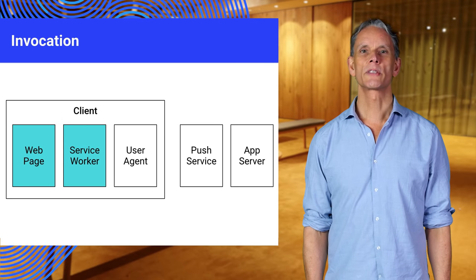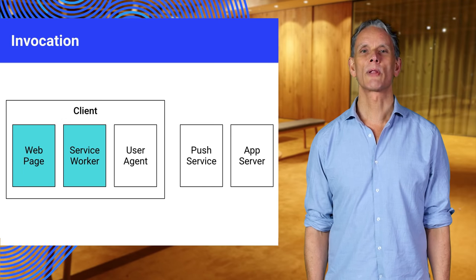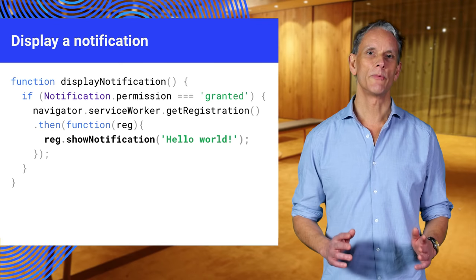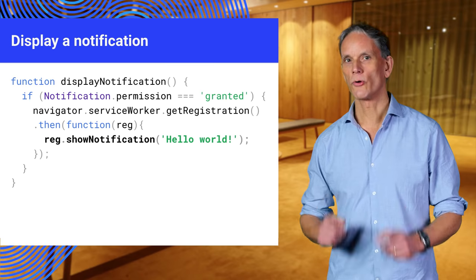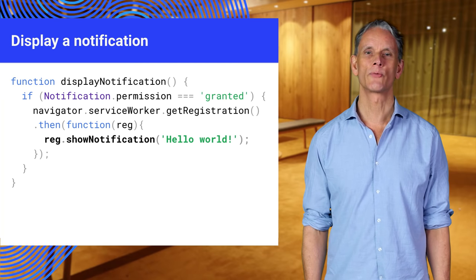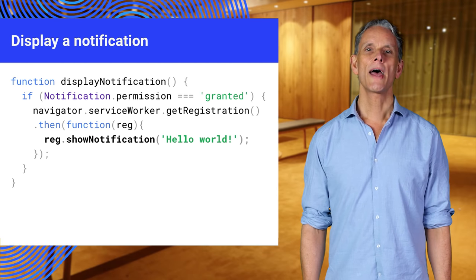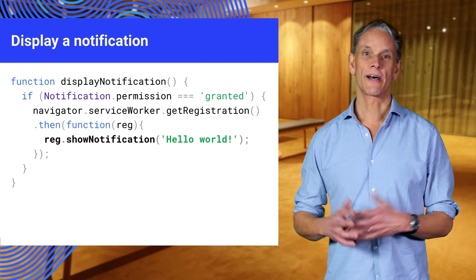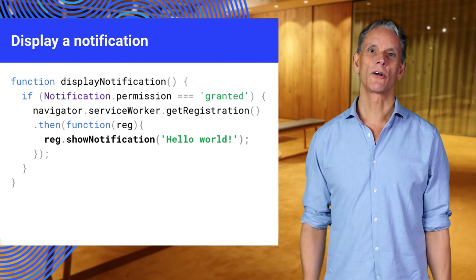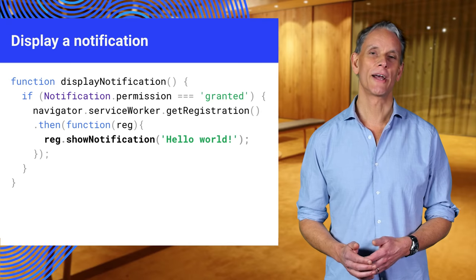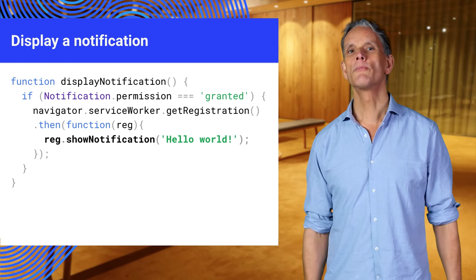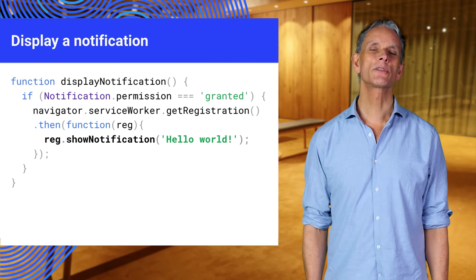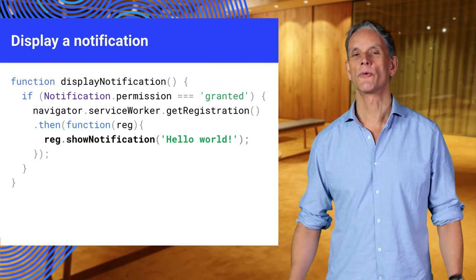Let's take a look at some examples for configuring and displaying a notification from a service worker. We first check that permission has been granted, then we call showNotification on the service worker registration object and pass in the notification title. You can try this out from the browser console — try it on the new tab page. For push notifications, you call showNotification in the service worker in response to a push event when a message arrives.